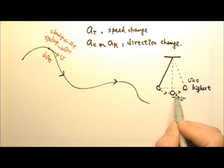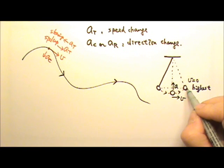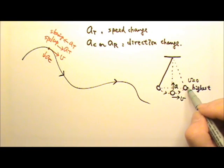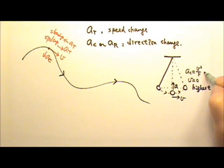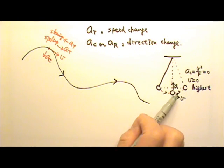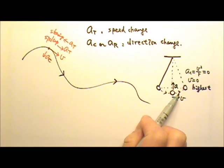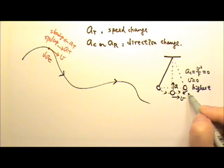At the lowest point, since the pendulum moves on a curve, there is a centripetal acceleration pointing toward the center (upward). At the highest point, the speed is zero so there is no centripetal acceleration — v²/r equals zero. However, there is still a tangential acceleration because the bob is slowing down as it goes up. Since the pendulum is slowing down, the tangential acceleration is opposite to the velocity direction.